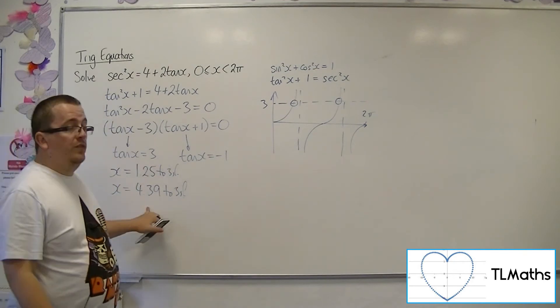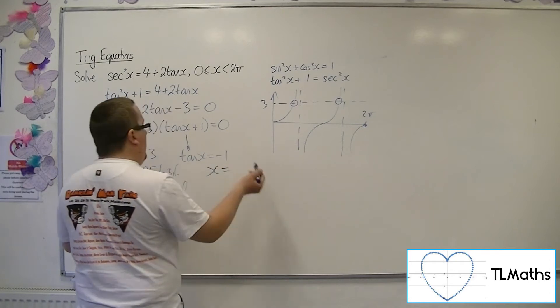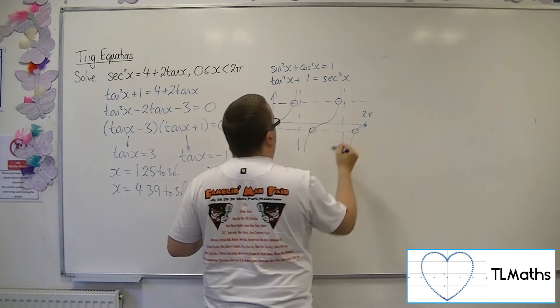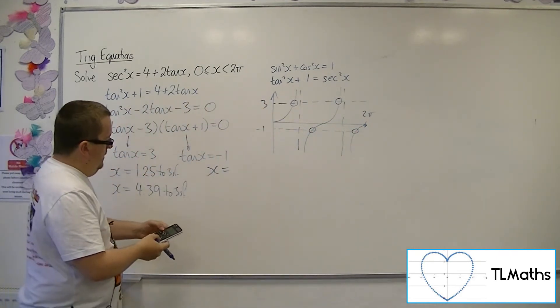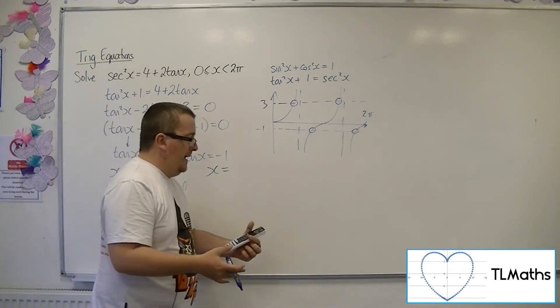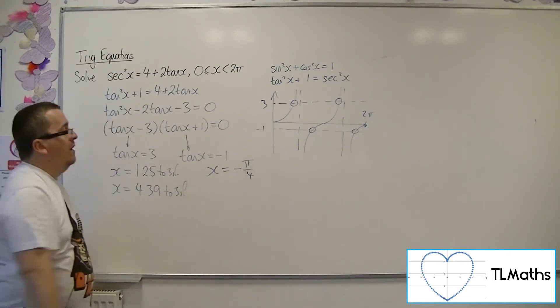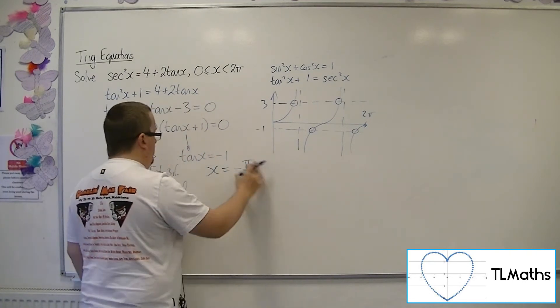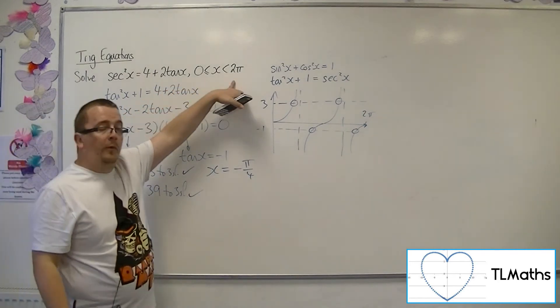So they are the two solutions for tan x equals 3. Now for tan x equals minus 1, minus 1 is down here, so I'm still expecting two solutions. Inverse tan of minus 1 is minus pi over 4. Now minus pi over 4 is to the left of the y-axis, so that's not a solution because I'm looking at solutions between 0 and 2 pi.